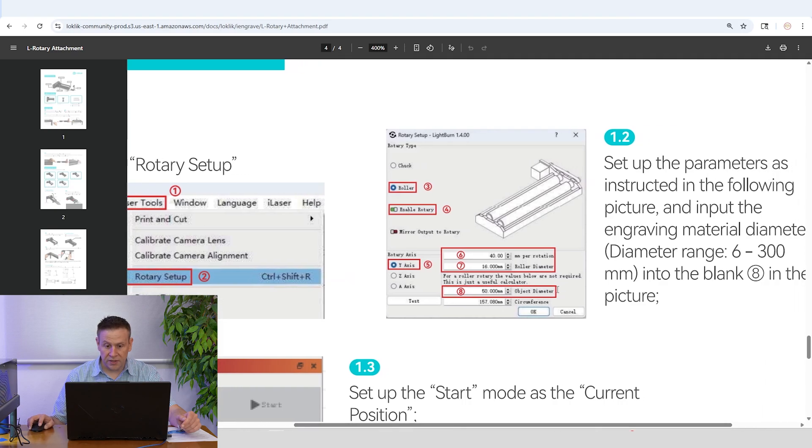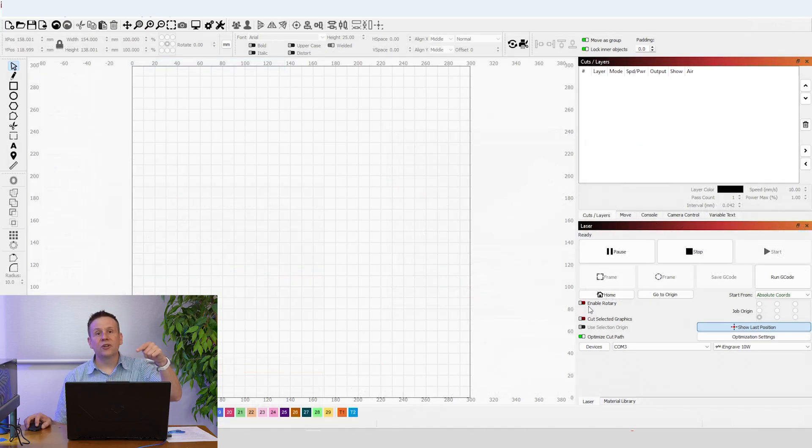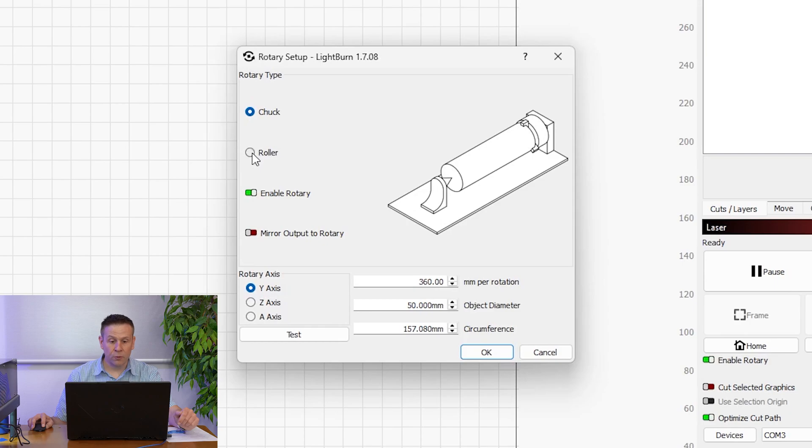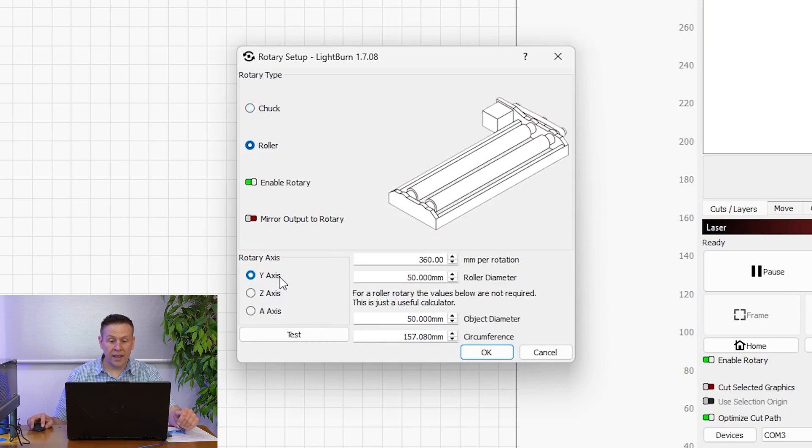And mainly, what I want to look for is the settings for the rotary setup within Lightburn. And I found that in the instructions. And it shows me everything that I need to have selected. And mainly the millimeter per rotation and the roller diameter. Now we'll jump into Lightburn software and follow those same directions. I'll enable the rotary and navigate to the top of the screen to rotary setup. And I'll make sure that I have the roller selected, the Y axis. That was that cable that we disconnected inside of the machine. That was the Y axis motor. And now I'll make sure that the millimeter per rotation is set to 40. And the roller diameter is set to 16 millimeters.